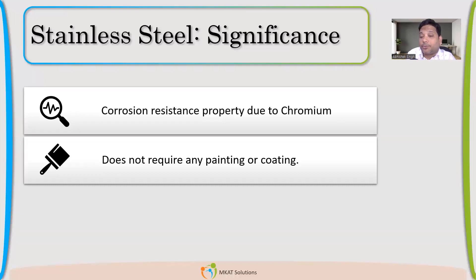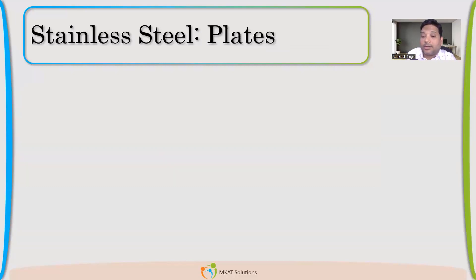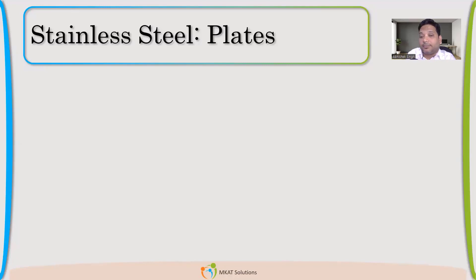The corrosion resistant property is due to chromium. Chromium is the element making it corrosion resistant. Stainless steel does not require any painting because chromium makes a layer of Cr2O3 which acts as a coating, so no additional coating is needed. Actually, it should not be painted, because painting removes contact with the atmosphere — oxygen will not be able to contact the chromium, so the passive layer will not form. That is why we should never paint stainless steel.